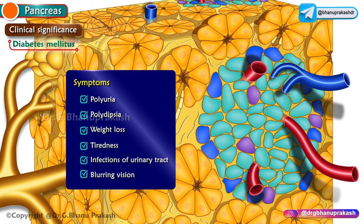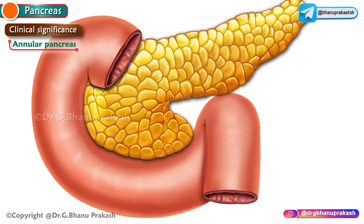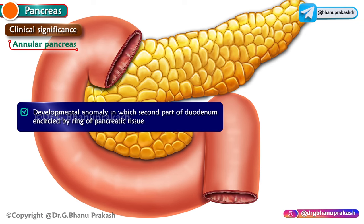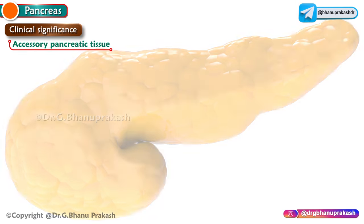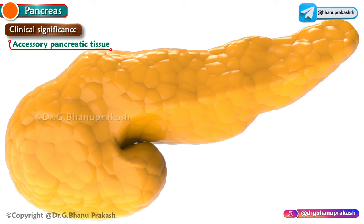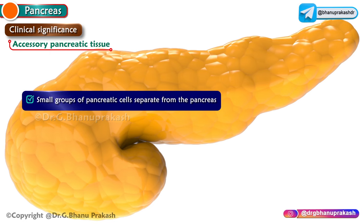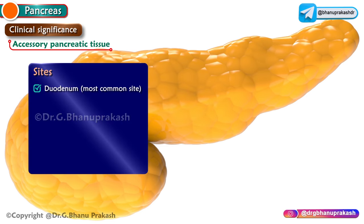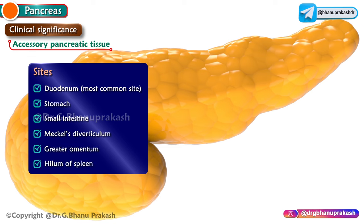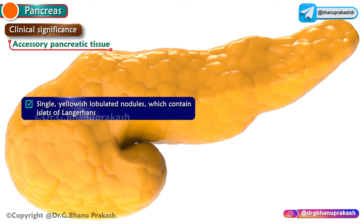Annular pancreas is a developmental anomaly in which the second part of the duodenum is encircled by a ring of pancreatic tissue. Accessory pancreatic tissue is a rare condition in which a small group of pancreatic cells separate from the pancreas; the most common site is the duodenum, though other sites include the stomach, small intestine, Meckel's diverticulum, greater omentum, and hilum of the spleen. These are usually single, yellowish, lobulated nodules containing islets of Langerhans.